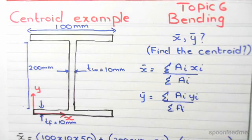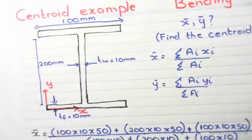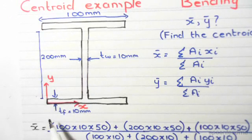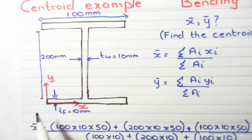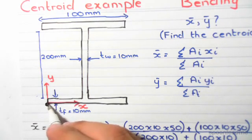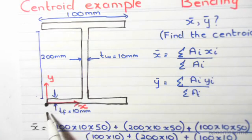So how do we work out the centroid? We always adopt a set of arbitrary axes and use it as a reference point. In this case, in this I-section, my x and y axes are on the bottom left corner. The reference point is right here, the bottom left corner.